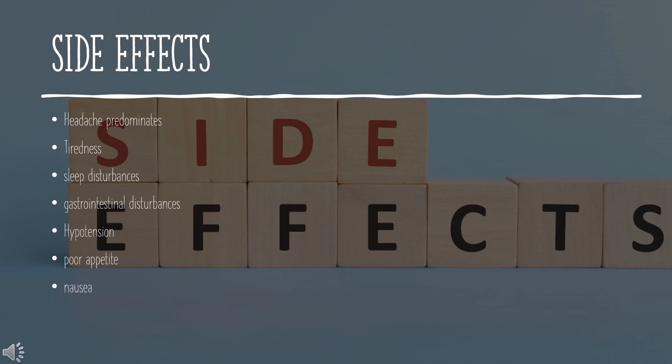The following adverse effects have been reported in studies with isosorbide mononitrate. Very common: headache predominates, occurring in up to 30% of patients, necessitating withdrawal in 2–3%, but the incidence reduces rapidly as treatment continues.